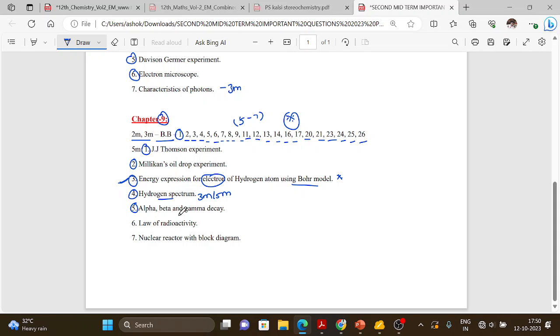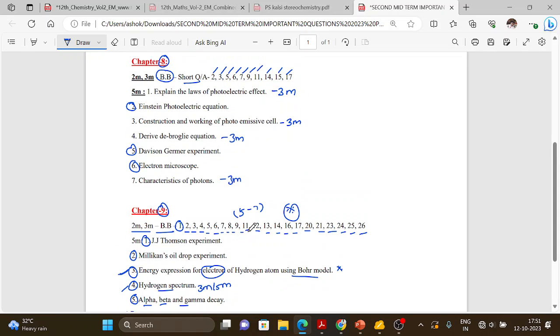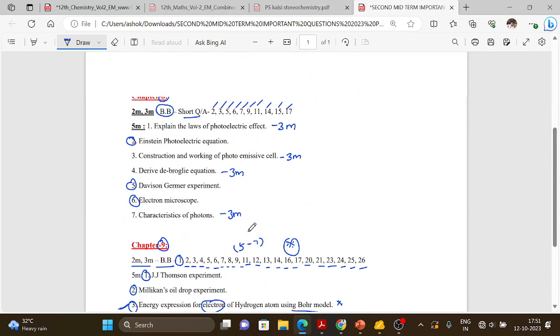Alpha, beta, gamma decay - three mark questions you can learn. Law of radioactivity and nuclear reactor block diagram are very important. Alpha, beta, gamma experiment is also a very important three mark question. So all of these - three mark, four mark, six mark - you can learn. Next, you can learn one more question.